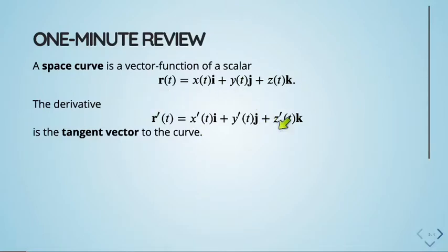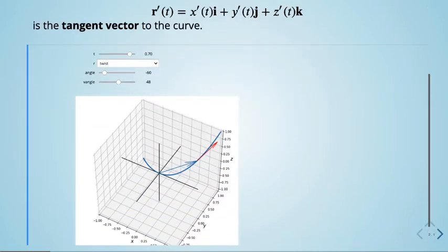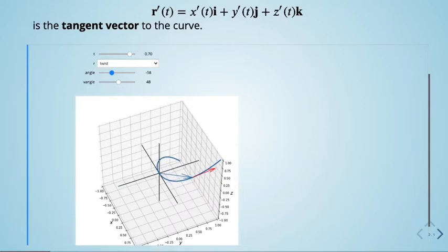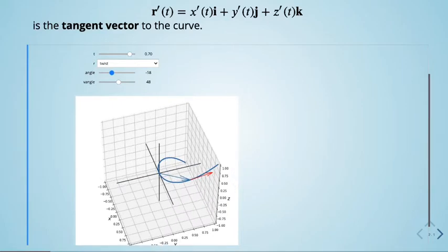The neat thing is that this has geometrical significance. If I take this derivative, I get another vector-valued function r′(t), and we can interpret that nicely as the tangent vector to a curve. At each point on the curve — where each point represents one output value of my function — if I compute the derivative and plot it with its tail at that point, you can see it's the tangent vector to the curve.